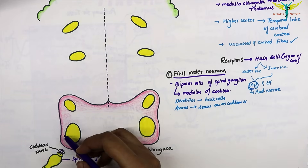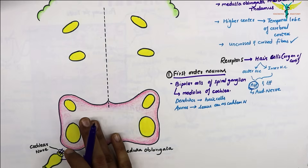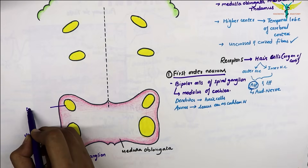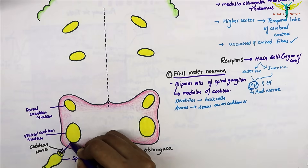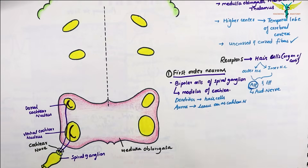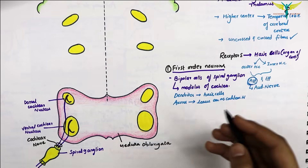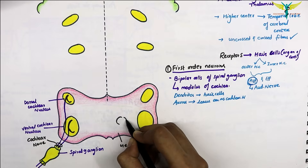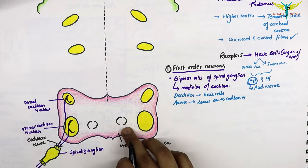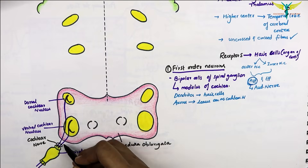In the medulla oblongata, these fibers divide into two groups and end on the ventral cochlear nucleus and the dorsal cochlear nucleus of the same side. The afferent nerve fibers to the hair cells arise from the superior olivary nucleus on both sides of the medulla, and fibers from these nuclei reach the hair cells by passing through the ventral and dorsal cochlear nucleus and the cochlear nerve of the same side.